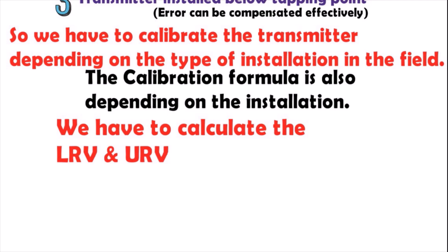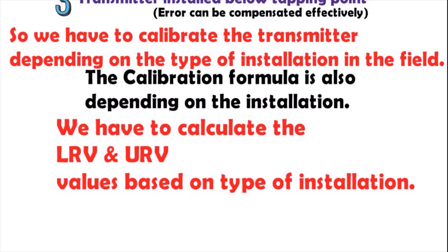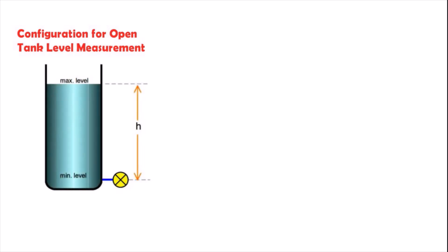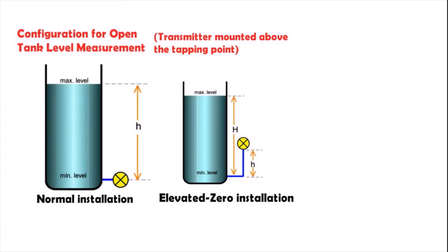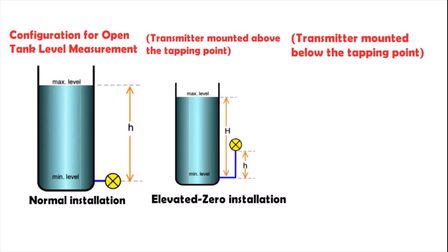We have to calculate the LRV and URV values based on the type of installation configuration for open tank level measurement. Let's look at this: there is one height minimum and maximum level - this is normal installation. The second case of installation, transmitter mounted above the tapping points, has two types of heights - this is elevated zero installation.